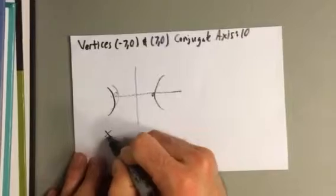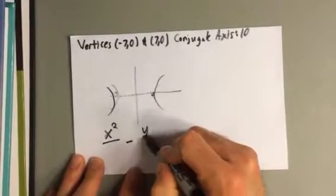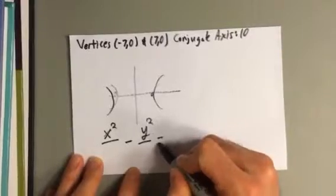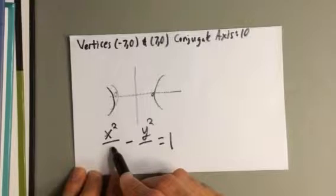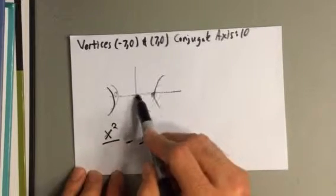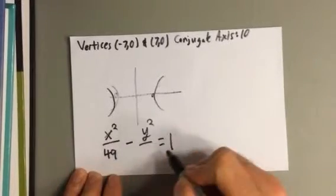So this one's going to have x squared over something minus, because it's a hyperbola, y squared over something equals 1. Now those somethings—this is always the distance between center and vertex squared. So center to vertex was 7, and 7 squared is 49. That's always the first denominator.